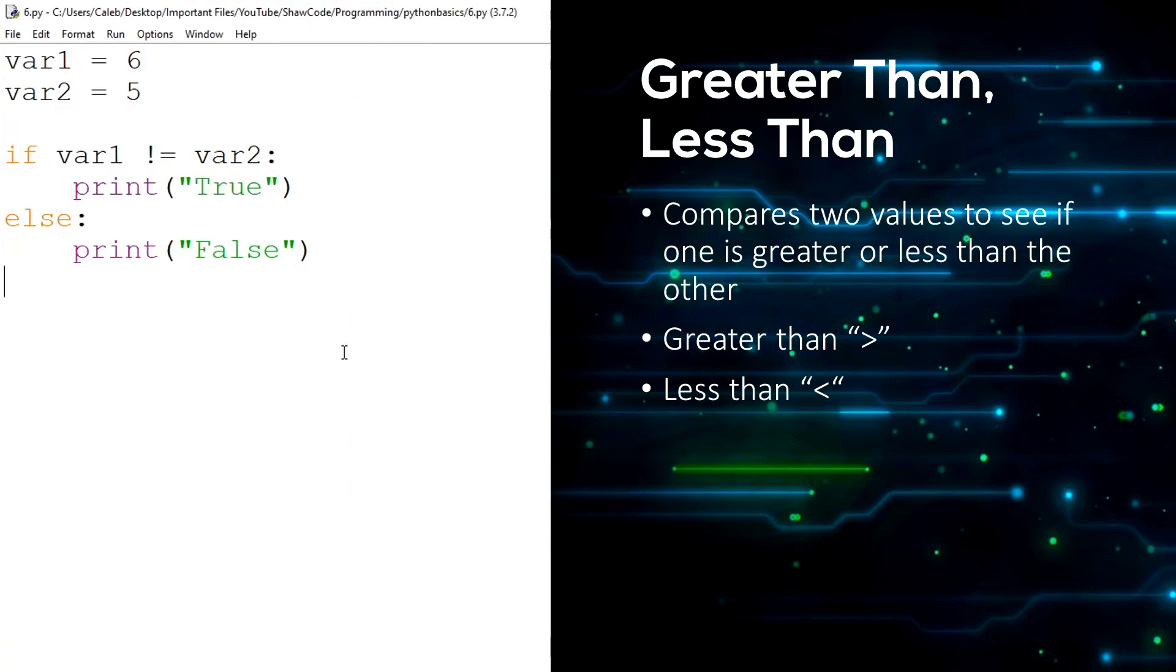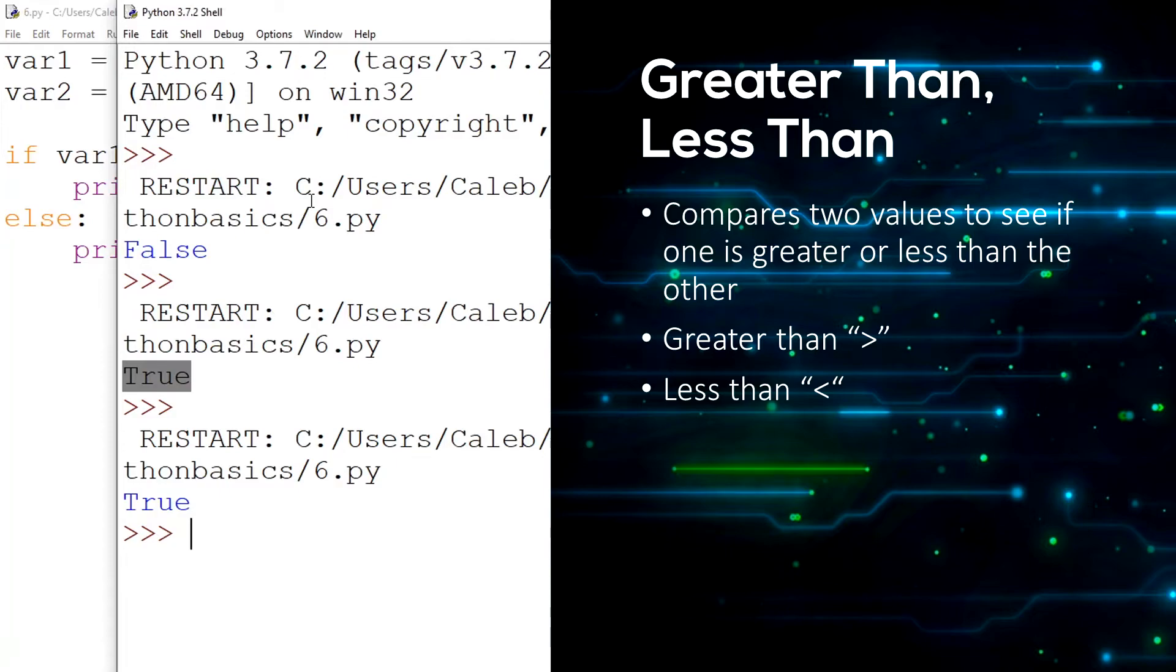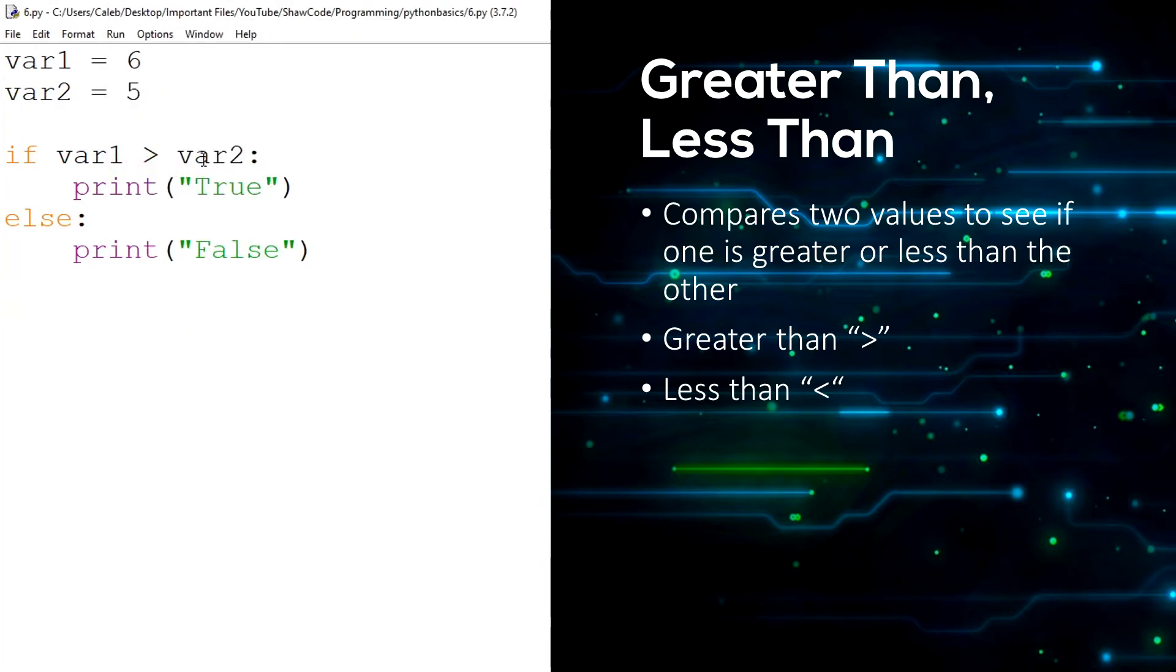Then there's also greater than and less than, so we can change this to a greater than symbol. If var1 is greater than var2, print true, else false. And then we get true because 6 is greater than 5.